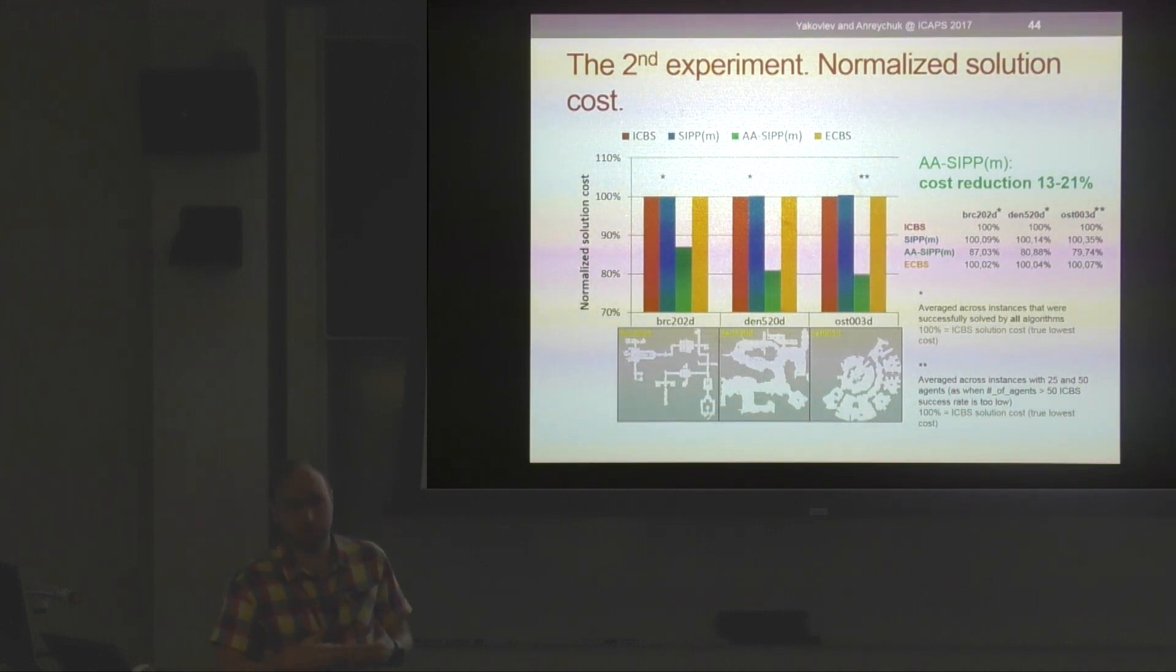I agree with this, and it actually pays off because we get solutions of much lower cost. We're planning to implement actually CBS with this sort of constraint just to see how it would work. In my opinion, it would just fail. I mean, it won't solve any problem in a five-minute time cap because the branching factor is enormous. Yeah, we need to move on to the next speaker.